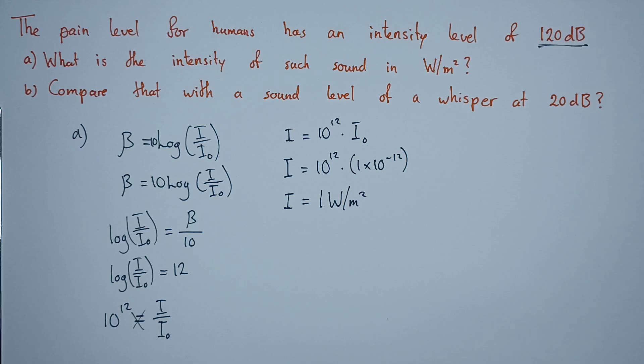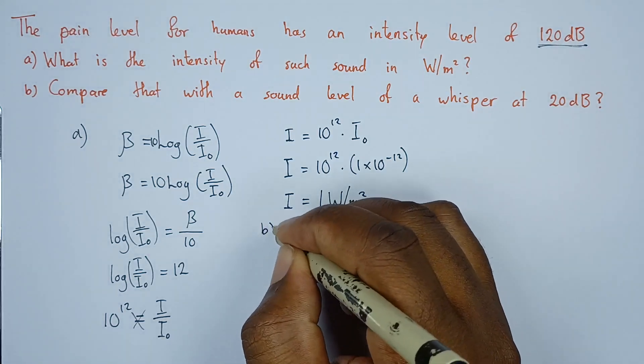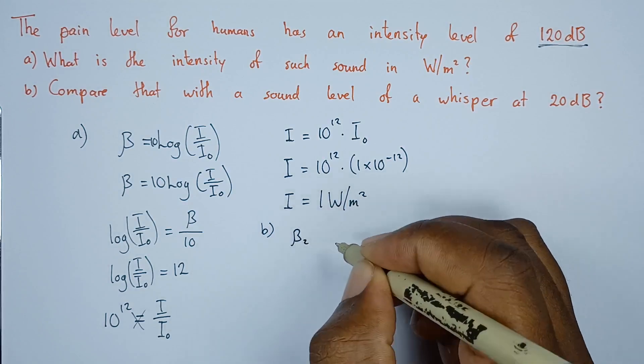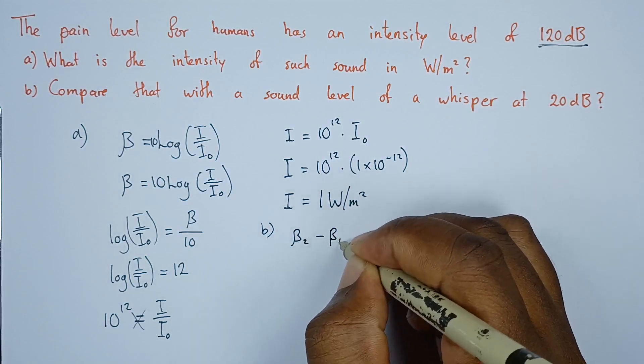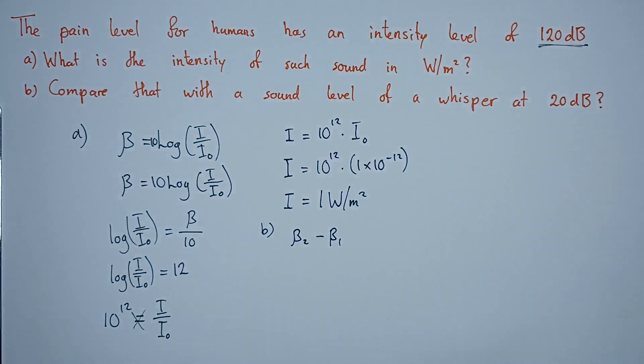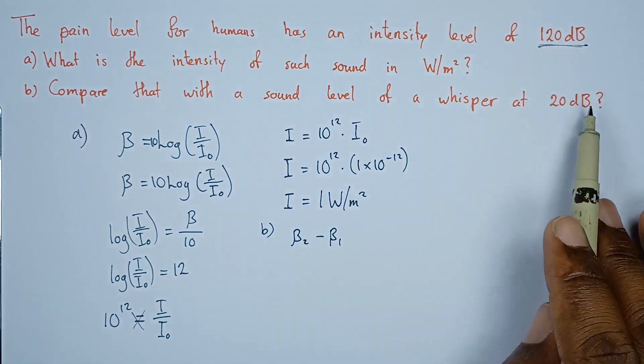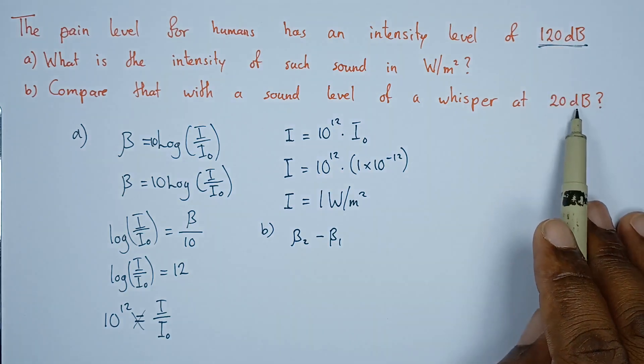Since we're comparing these two, we're just finding the difference between the two levels of intensity. We'll say beta 2 minus beta 1. Let's consider beta 2 to be the 120, beta 1 can be the 20.